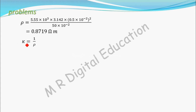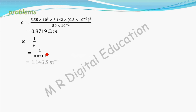To find conductivity kappa, you know that conductivity is nothing but 1 by rho, the reciprocal of resistivity. So kappa equals 1 by rho. Substituting the value of rho, conductivity kappa is 1.146 siemen per meter. This is the unit of conductivity.